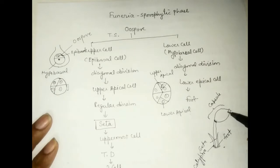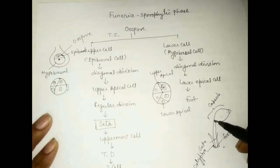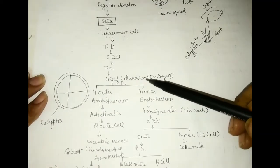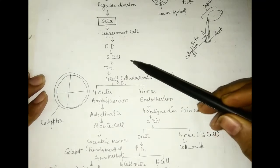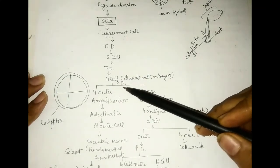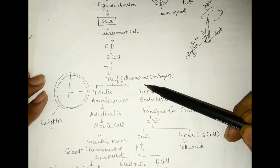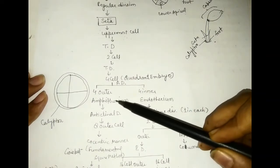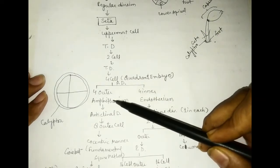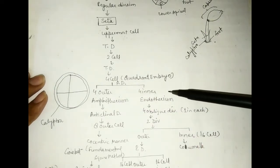Now we are going to study the capsule and how its formation occurs. The uppermost cells will develop into the capsule. The uppermost cells undergo a transverse division and two cells are formed. After division, it becomes the quadrant embryo stage. The outer cell is called amphithesium and the inner cell is called endothesium.